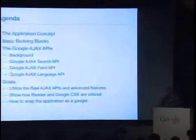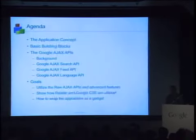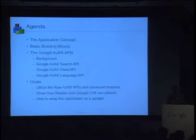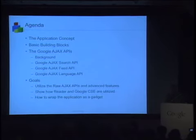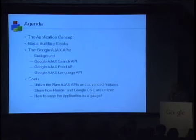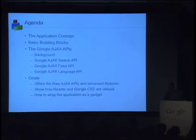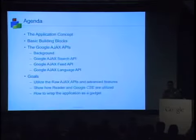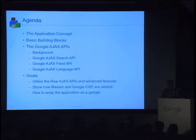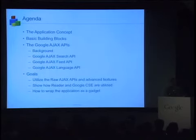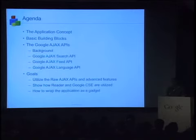The agenda for the talk is we're going to talk about the application concept. The talk actually came about regarding an application concept that I was asked to build internally at Google using the Ajax APIs. The problem is a real one. The application is real — you might not ever see it in the wild in its current incarnation, but it was a real problem we were trying to solve. We got to use our own technologies, and out of that effort came this talk, which was first given at Google I/O in San Francisco.